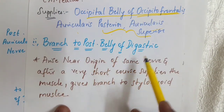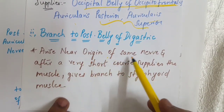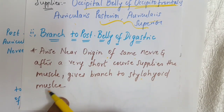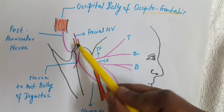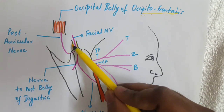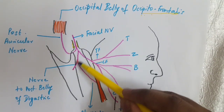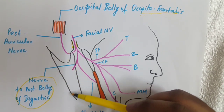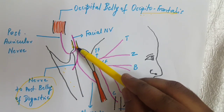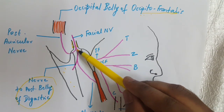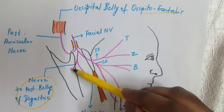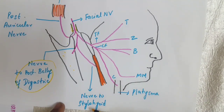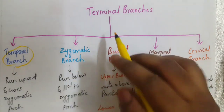The nerve to the posterior belly of the digastric arises near the origin of the posterior auricular nerve and after a very short course supplies the muscle. It also gives a branch to the stylohyoid muscle. In the diagram, this is the posterior auricular nerve from the stylomastoid foramen, and this is the nerve to the posterior belly of the digastric, which also supplies the stylohyoid muscle.